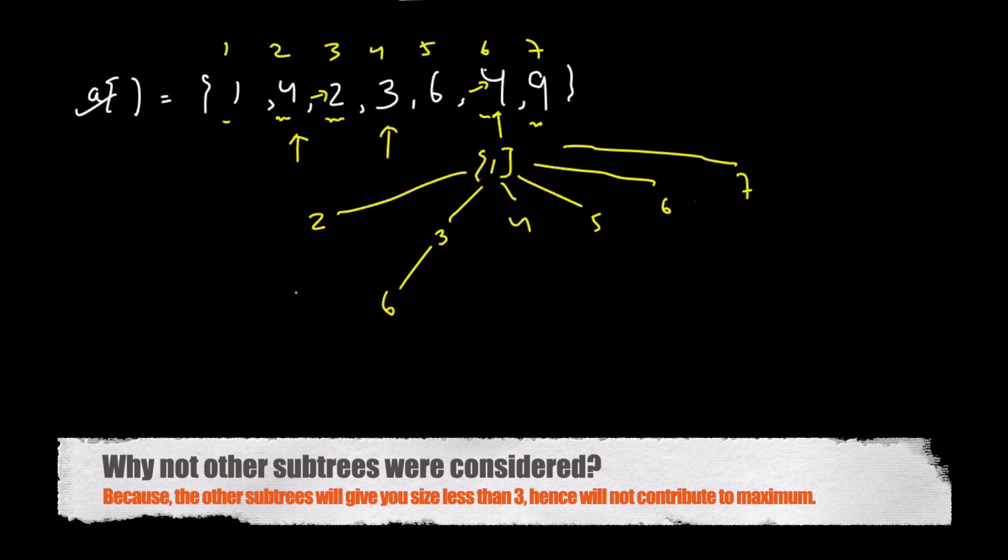So we can see that the maximum number of elements taken were 1 over here, 2 over here, 3 over here. So the answer is nothing but 3. So how do you code this dynamically? So this was the approach.